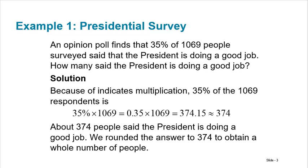An opinion poll finds that 35% of 1,069 people surveyed said that the president is doing a good job. How many said the president is doing a good job? Well, all I have to do is take 35% of 1,069. The word 'of' always means multiplication. 35% is 35 per hundred, or 35 over 100, which becomes 0.35 as a decimal. You do that simple math and round to a whole number because you can't have 0.15 of a person — so 374 people responded this way.